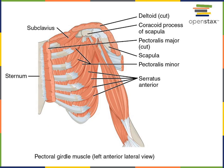Here from an anterior view we can see the pectoralis minor, a major muscle involved in protracting the scapula, as well as the serratus anterior, another muscle group involved in protracting the scapula.